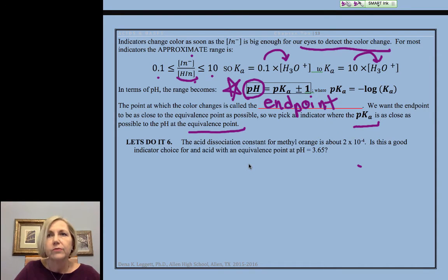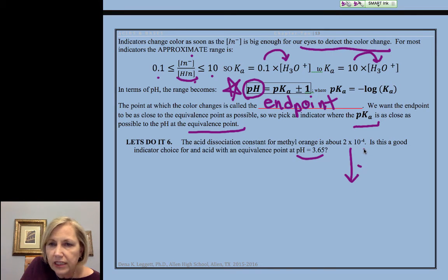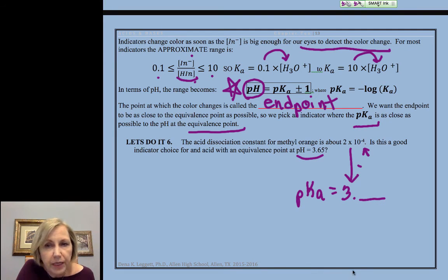Okay, so we'll talk more about, well, how do we know what the pH of the equivalence point is? All right, in this case, we're told that we have an acid where the equivalence point is 3.65. And the question is, would methyl orange be a good indicator? Well, this might be a multiple-choice question. They might give you a series of indicators, and you need to be able to look at that negative 4 and know that my pKa is going to be 3 point something. You might not know exactly what, but you should be able to guess the number in front.